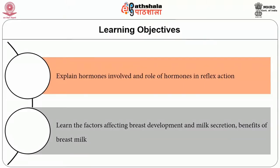The passage of milk through ducts is facilitated by longitudinally arranged myoepithelial cell processes whose contraction shortens and widens the ducts, allowing the free flow of milk to the nipple. The process by which milk is forcibly moved out of the alveoli is called milk ejection or let-down, and it is essential for milk removal from the lactating breast. After completing this module, you will be able to explain the hormones involved in milk secretion and the role of hormones in reflex action.